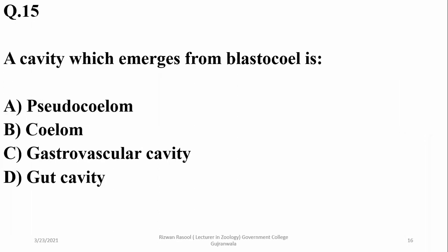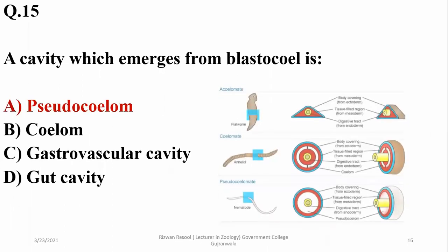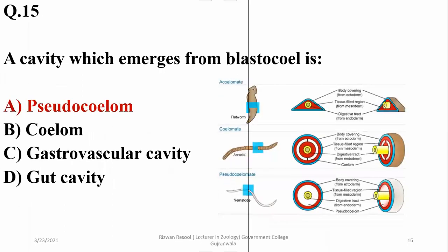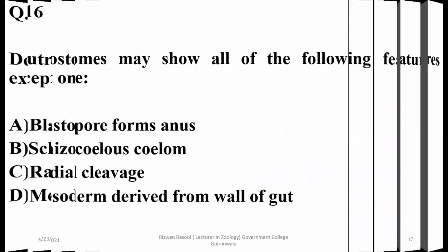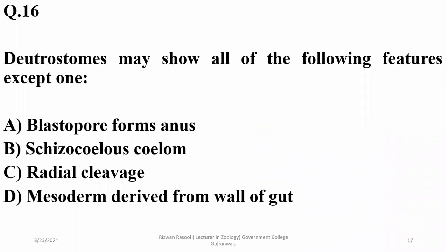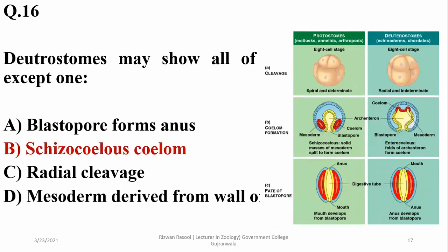Question thirteen: a cavity which emerges from the blastocoel is called a pseudocoelom, or false body cavity. Deuterostomes may show all of the following features except schizocoelom formation, which is a characteristic feature of protostomes.